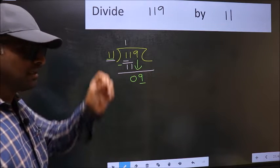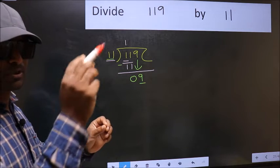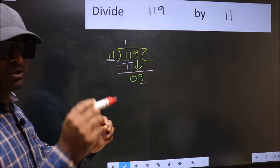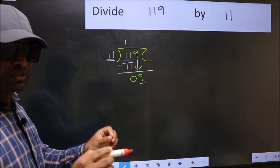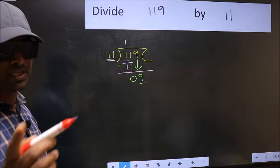I repeat: bringing the number down and also putting dot and taking 0—both at the same step. You should not do both at the same step. Instead,